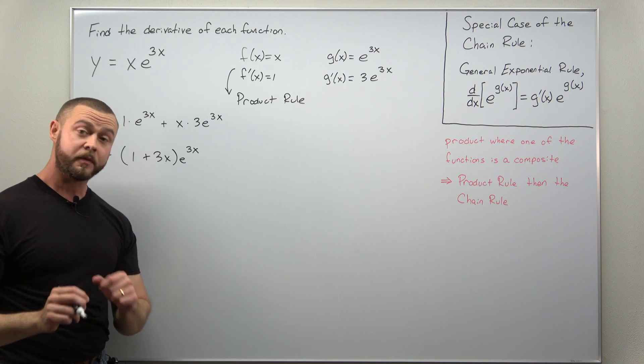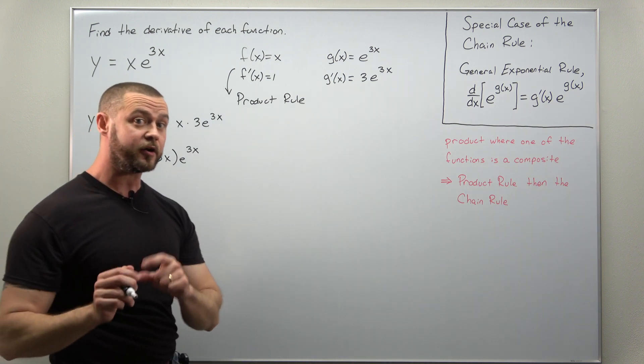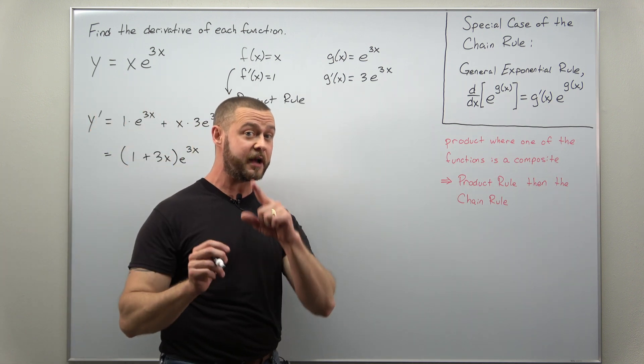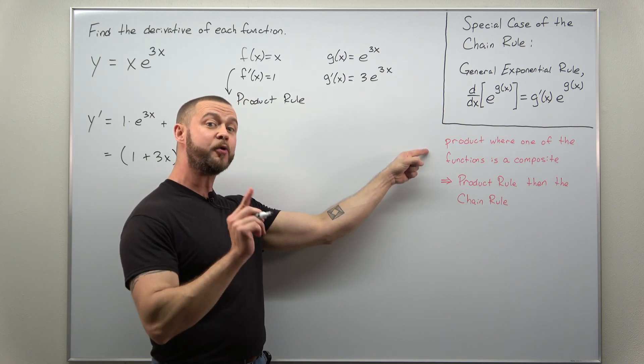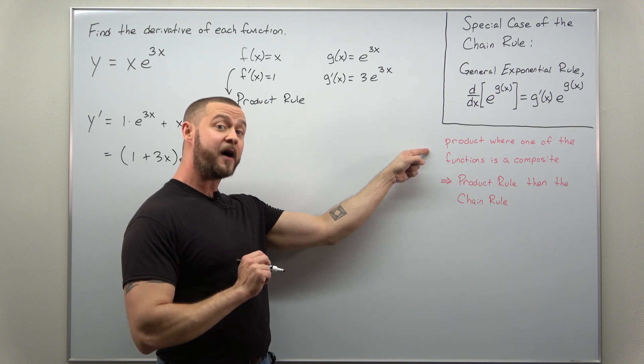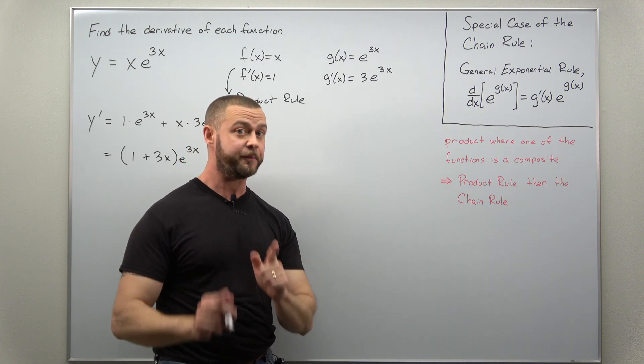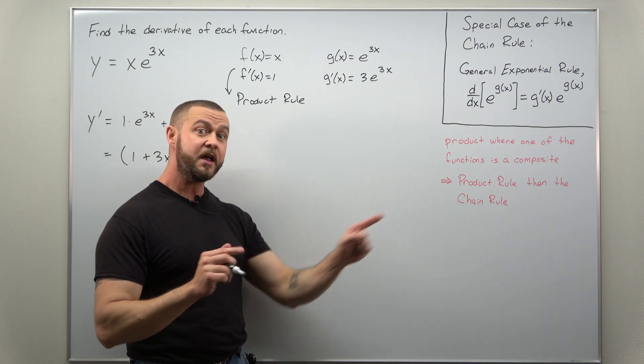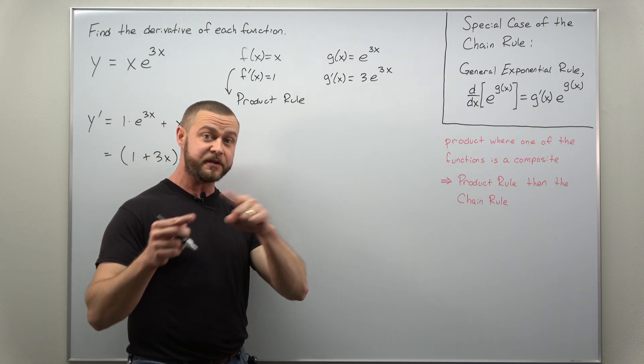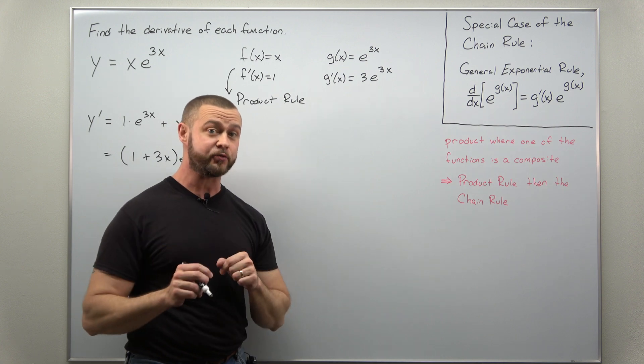There we go. Now make sure you can see the order in which we're applying the product and chain rules. Our function was ultimately a product where one of the functions was a composite. So that tells us we're going to be applying the product rule first, and then when we differentiate the individual pieces, that's where the chain rule comes in.